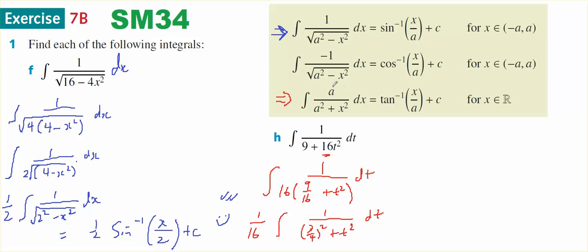Since I need an a in the numerator, I need 3 quarters there. So I've got a 1 on 16 integral, I need 3 quarters over 3 quarters squared plus t squared, dt. To multiply and put that 3 quarters in there, I need to counter and balance it by multiplying by 4 thirds. The 4 thirds times the 3 quarters would be the same as what this expression is. 4 goes into 16 four times, I've got 1 on 12 integral, 3 on 4 over 3 on 4 squared plus t squared, dt.